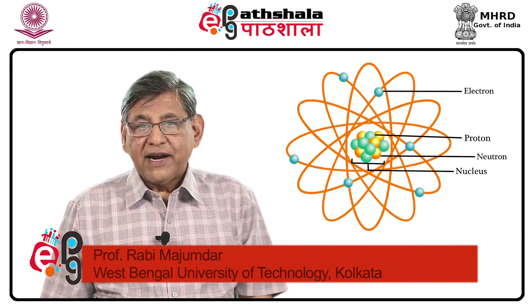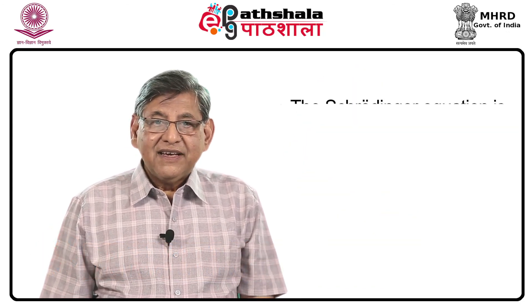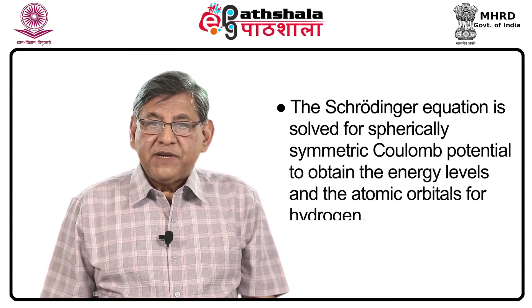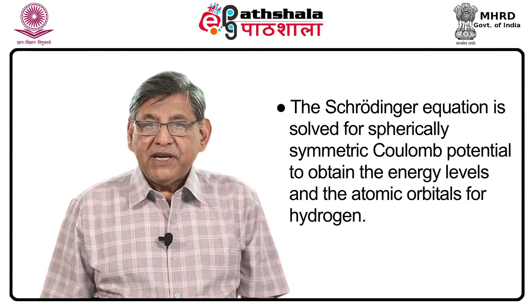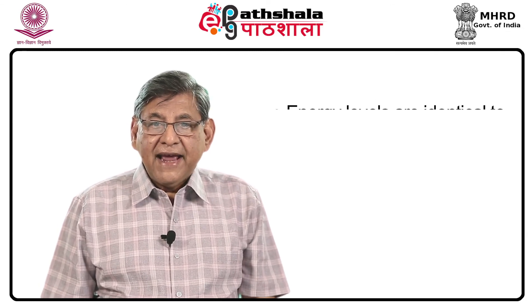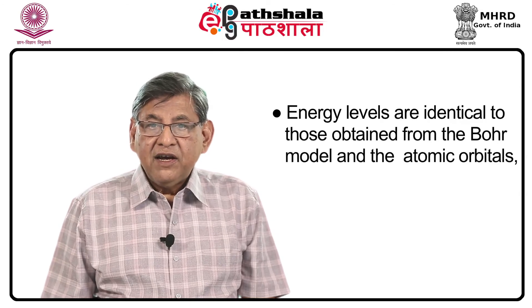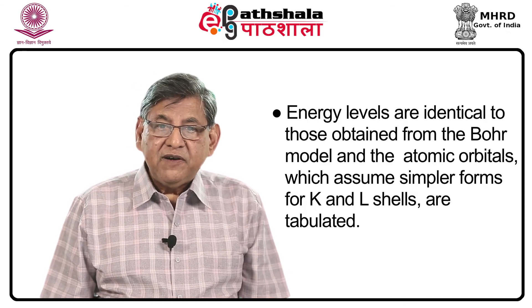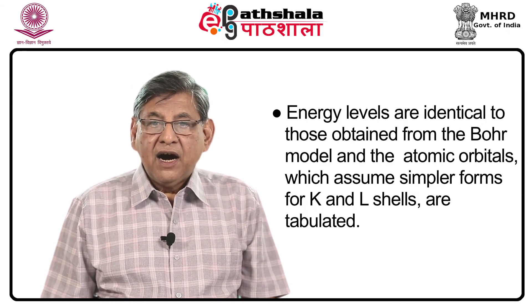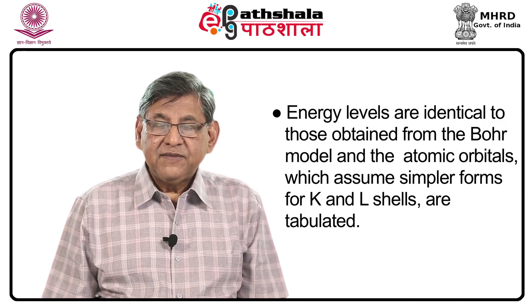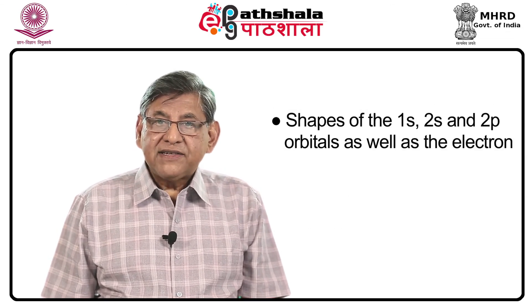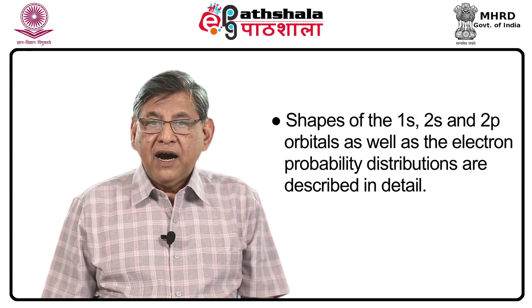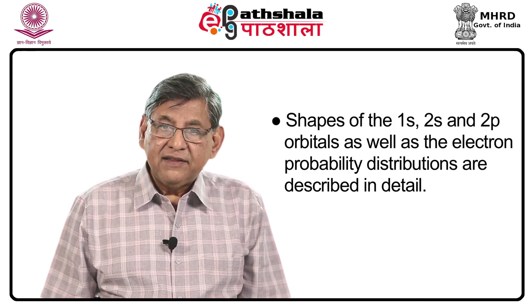Let us now summarize what we have learned from this lecture. The Schrödinger equation is solved for spherically symmetric Coulomb potential to obtain the energy levels and the atomic orbitals for hydrogen. Energy levels are identical to those obtained from the Bohr model, and the atomic orbitals, which assume simpler forms for K and L shells, are tabulated. Shapes of the 1s, 2s, and 2p orbitals, as well as the electron probability distributions, are described in detail. Thank you.